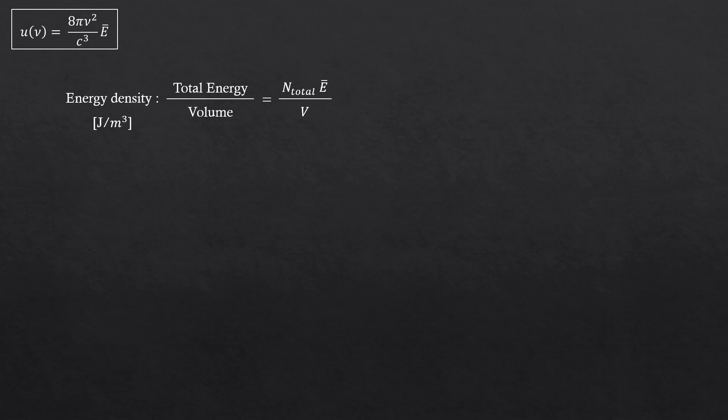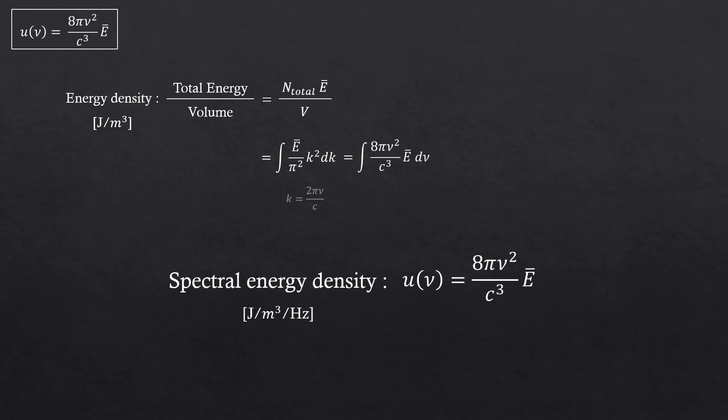So by plugging in what we derived just before, and converting the wave number k into 2 pi frequency over the speed of light, we get this. Since this is the energy density, the spectral energy density, which is per frequency, is just this. So guys, good luck on your study.